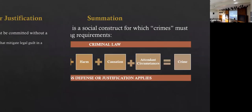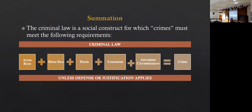So, that's the equation of crime. Crime is a social construct, but under criminal law, we have to have: actus reus + mens rea + harm + causation + attendant circumstances = crime, unless there's a defense or justification. The prosecutor is burdened with proving each one of these elements beyond a reasonable doubt. If they fail to prove even one element beyond a reasonable doubt, the case is dismissed — the jury has to find the person not guilty.